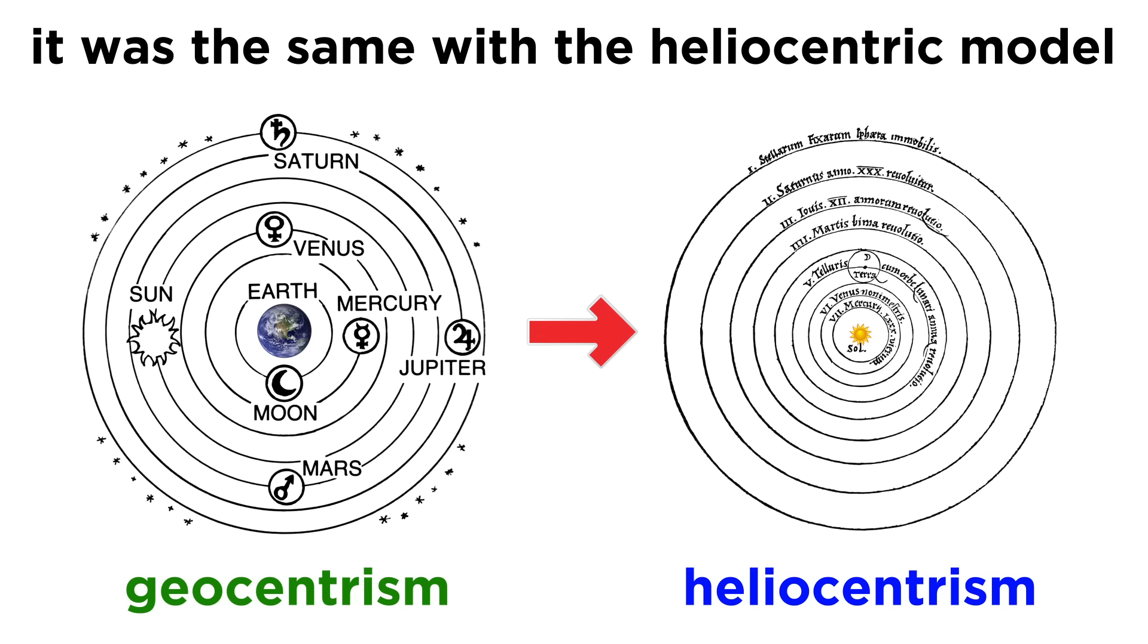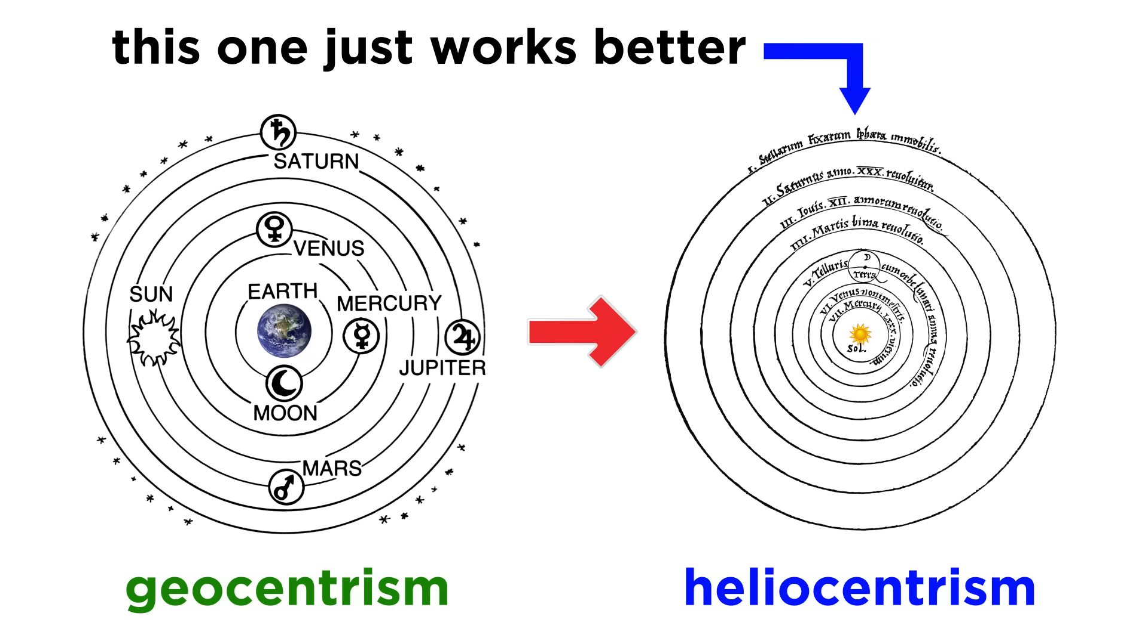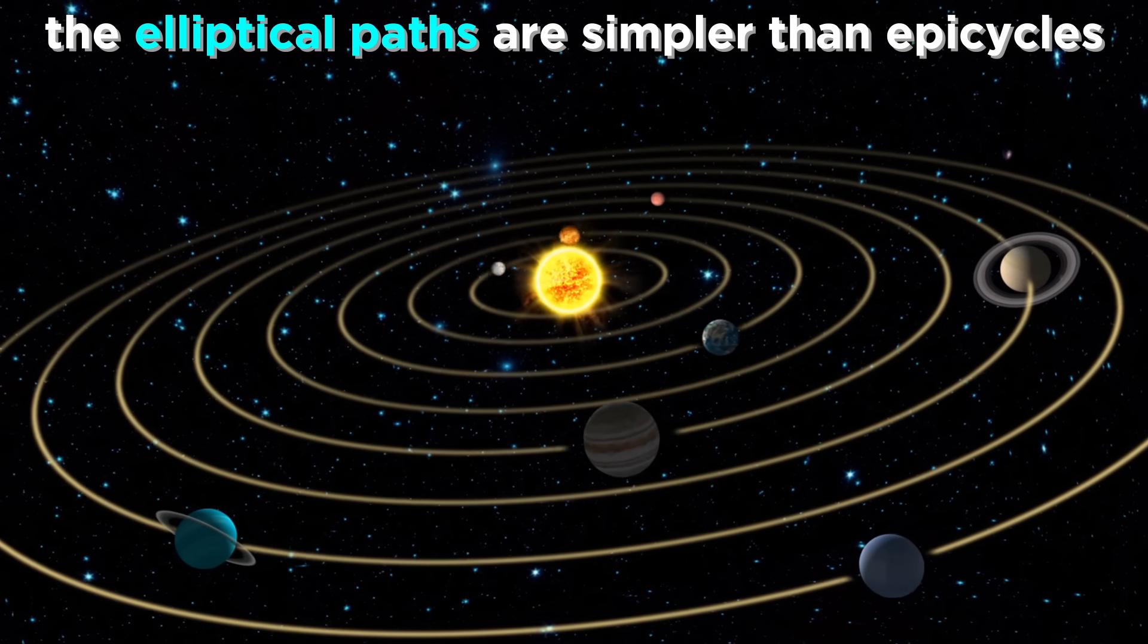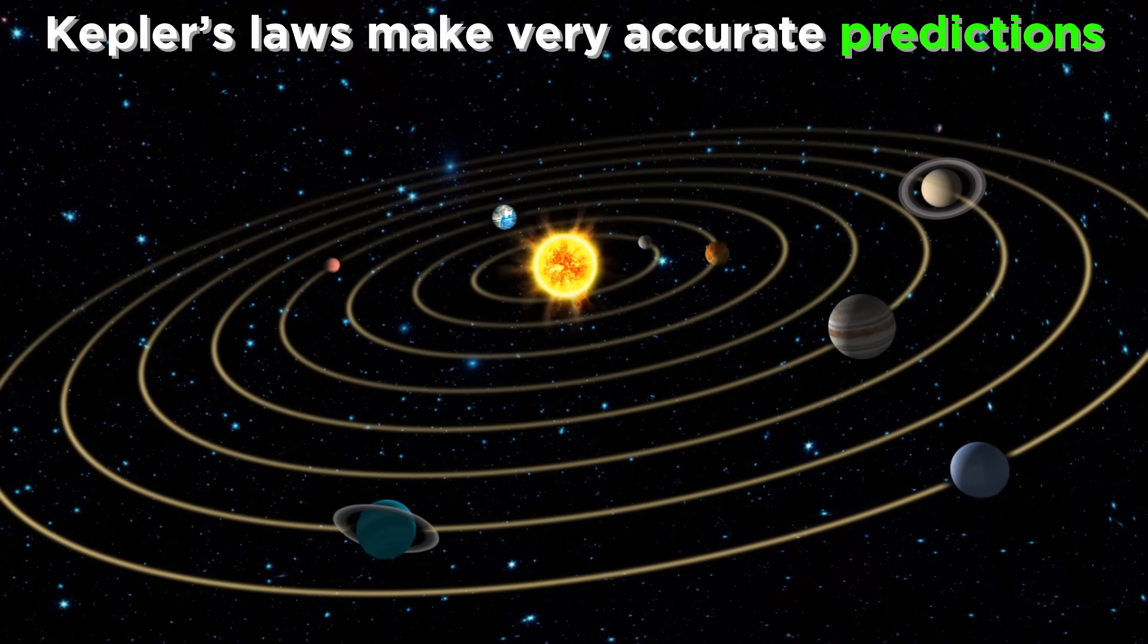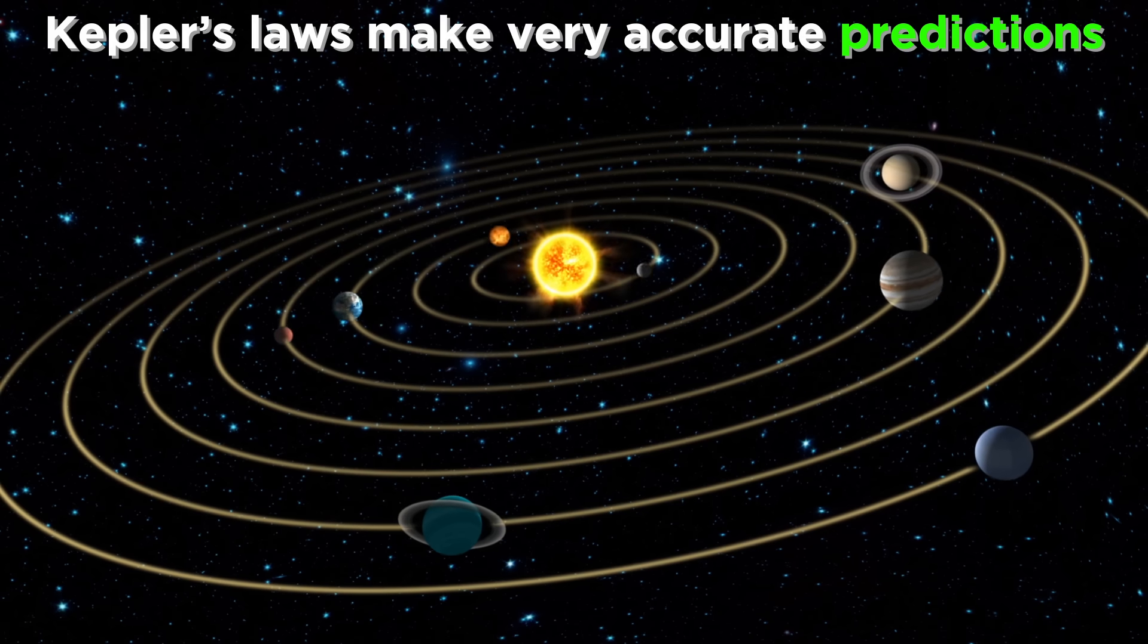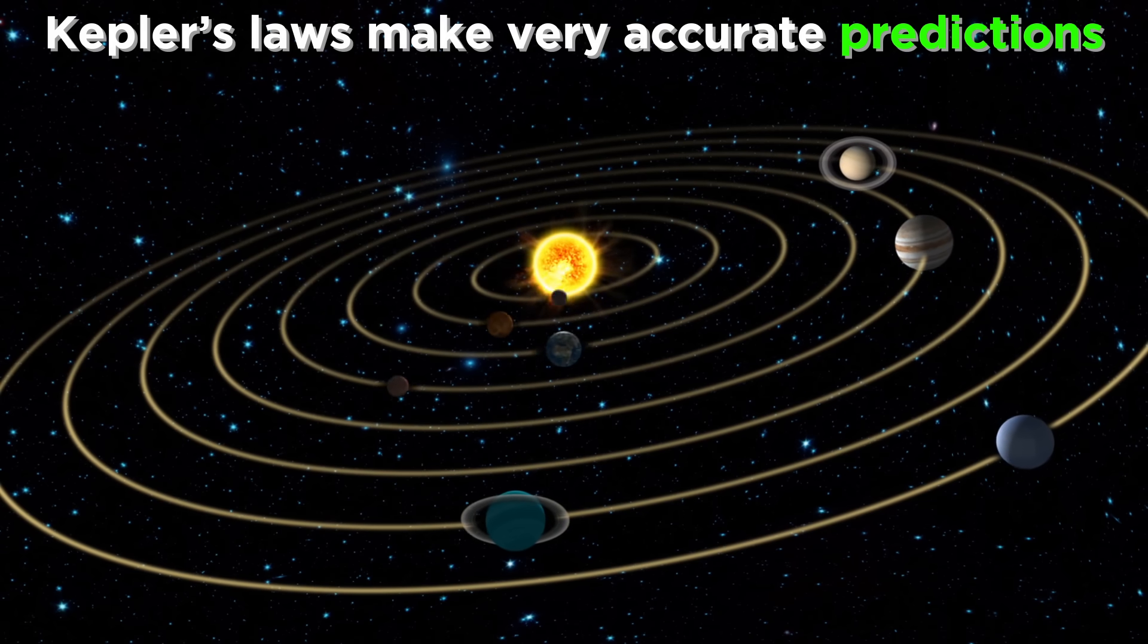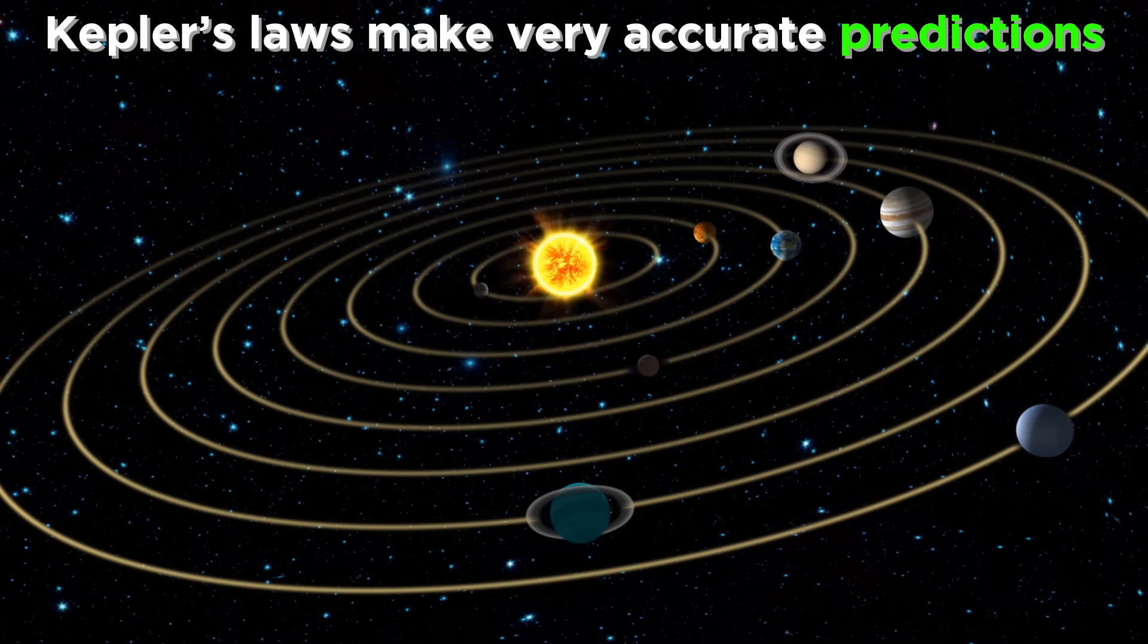This is the same reason that the heliocentric model replaced the geocentric model when Copernicus and Kepler came around. It just works better. The orbits of the planets don't have to be explained by epicycles upon epicycles. If the sun is at the center of the solar system, the planets follow very simple ellipses, and Kepler's laws predict the positions of planets with much better accuracy and precision than any previous model.